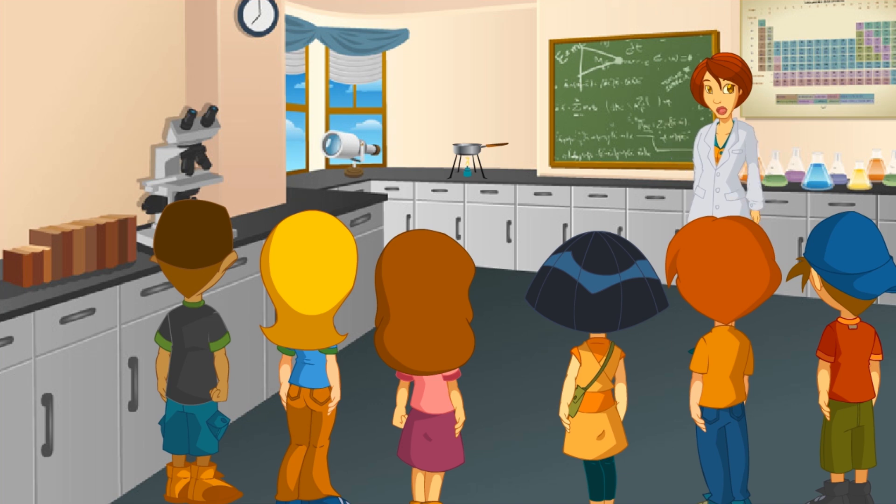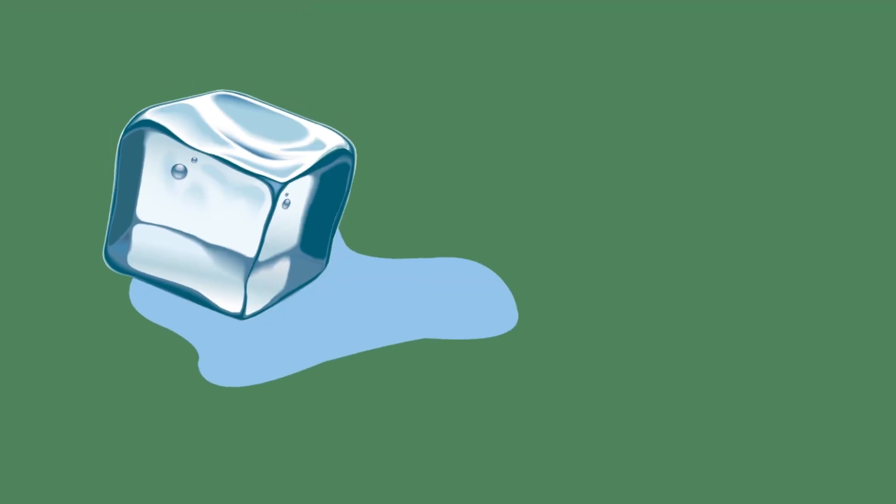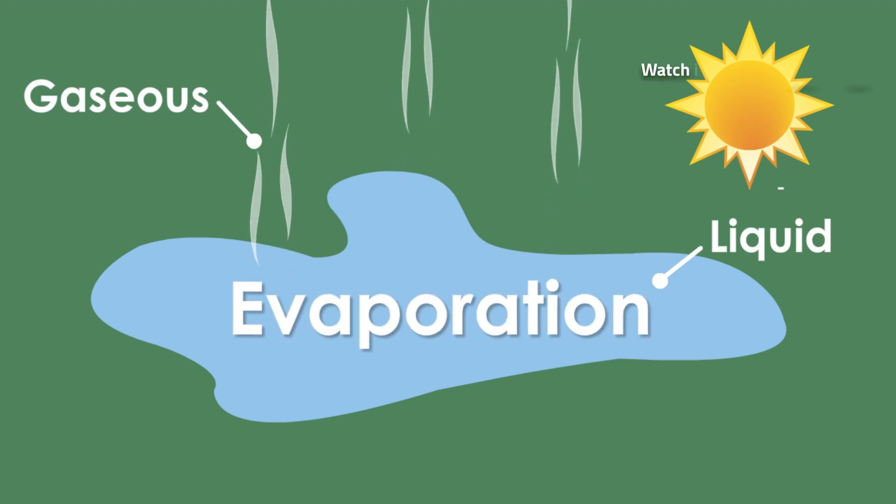See? The matter that surrounds us can be found in at least three different states or phases: solid, liquid, and gaseous. Besides, it can change phases. In this case, water turns from liquid state into gaseous state. This phase transition is called evaporation and occurs on the surface of the liquid.